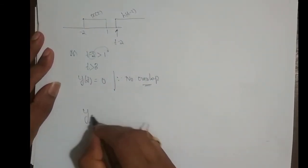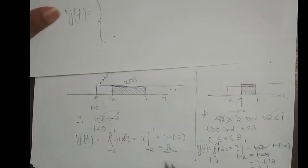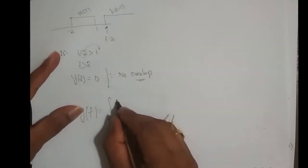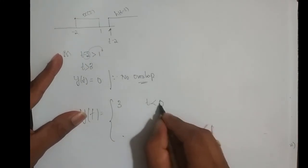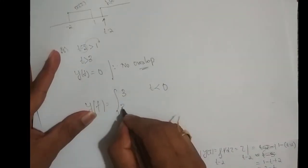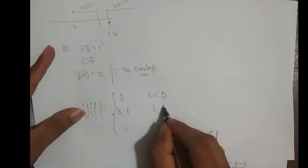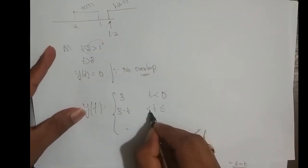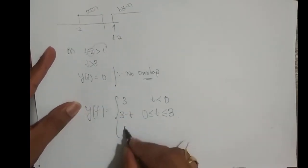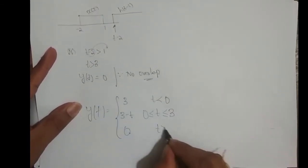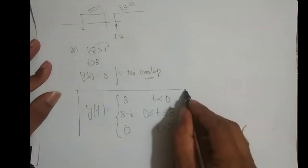Combining the outputs: y(t) = 3 for t < 0; y(t) = 3-t for 0 ≤ t ≤ 3; and y(t) = 0 for t > 3. This is the whole system output.